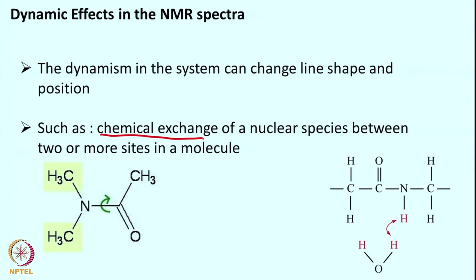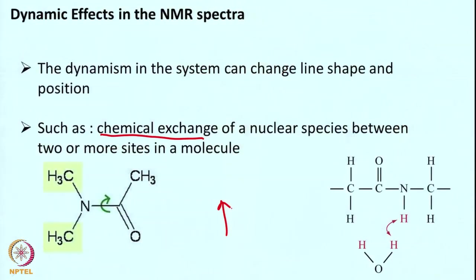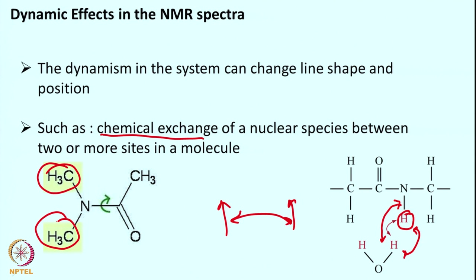Chemical exchange means a spin is hopping between two states. For example, an amide NH proton exchanging with bulk water, or a CH3 group whose bond rotates so that the two CH3 groups swap positions. These effects give rise to various dynamic effects in NMR spectroscopy, changing the spectrum.